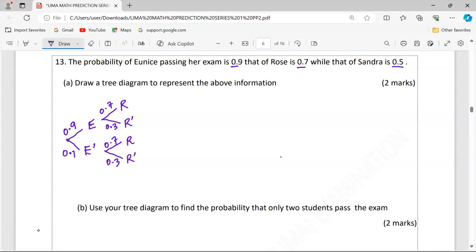And finally, we will talk about Sandra now, whereby we are saying Sandra's outcome is also independent. We can have Sandra passing, Sandra failing. The passing is 0.5, which means the failing is also 0.5.